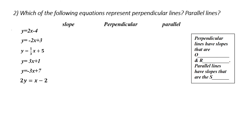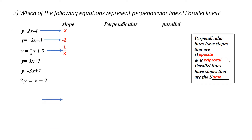Question two: which of the following equations represent a perpendicular line and a parallel line? First, what do we know about perpendicular lines? They have slopes that are opposite and reciprocal. What do we know about parallel lines? They have slopes that are the same. So let's start by finding the slopes of all of these equations. My first equation has a slope of two, second has a slope of negative two, third has a slope of one third, fourth has a slope of three, and my fifth one has negative three in front of x.